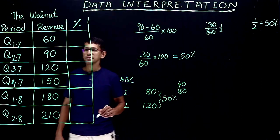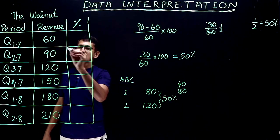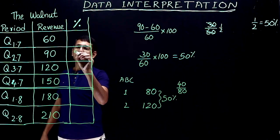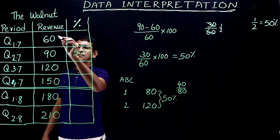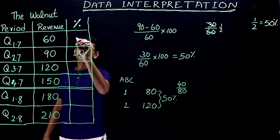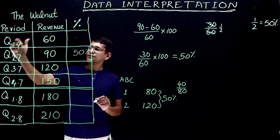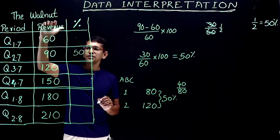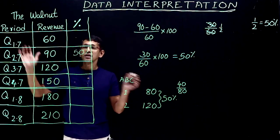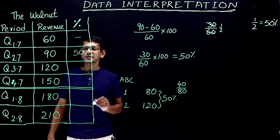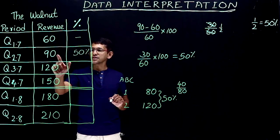Now look at these percentage columns. From 60 to 90, the increase is 50 percentage — we'll write that in this column. For the first column, the Q1 revenue is 60 but there's no prior period given, so we have no idea where 60 increased from. We'll keep that column vacant. 60 to 90: 50 percentage for the next quarter.